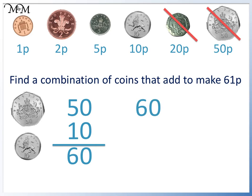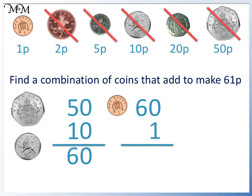We have 60 and need 61. We have already crossed off 50p and 20p. 60 plus 5 would be 65, and 60 plus 2 would be 62. 60 plus 1 makes 61, which is what we need. We can see that 0 plus 1 equals 1, plus 6 tens makes 60, so we have 61 in total. We can make 61p using a 50p, 10p and 1p.